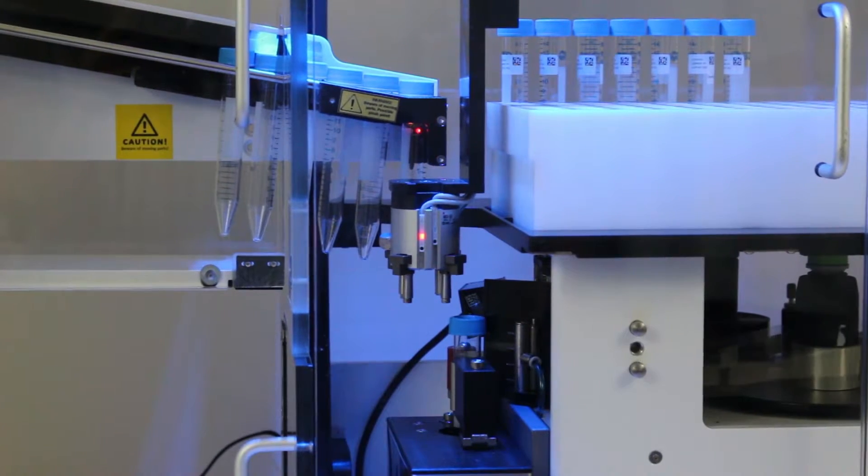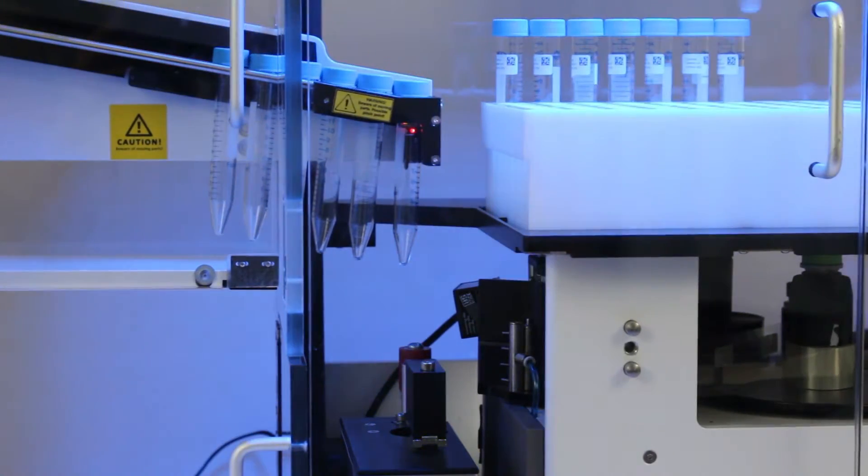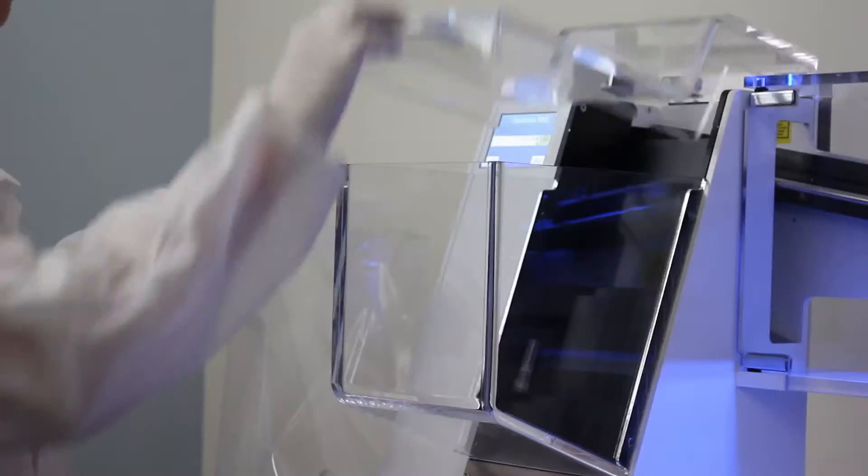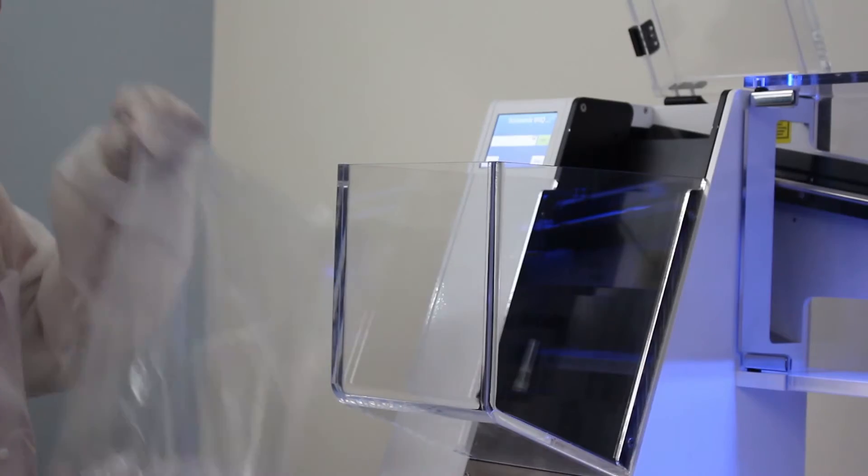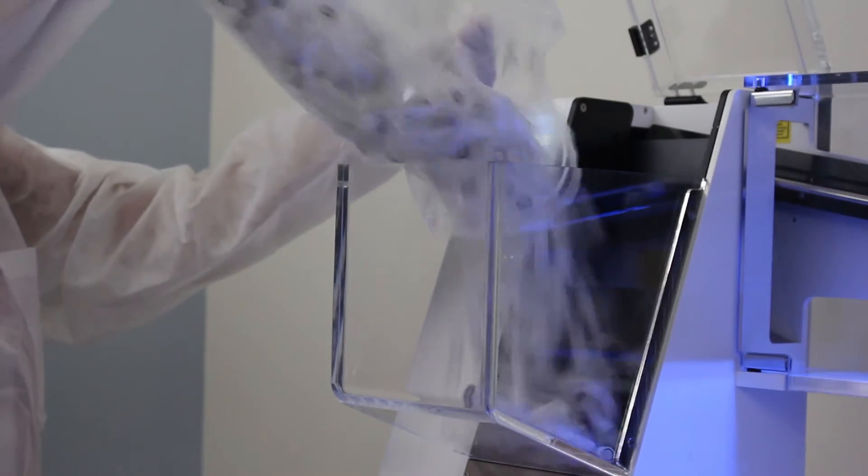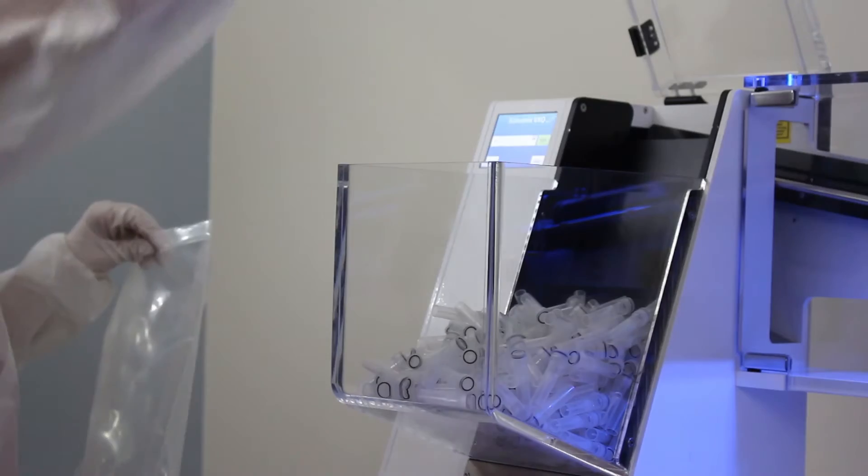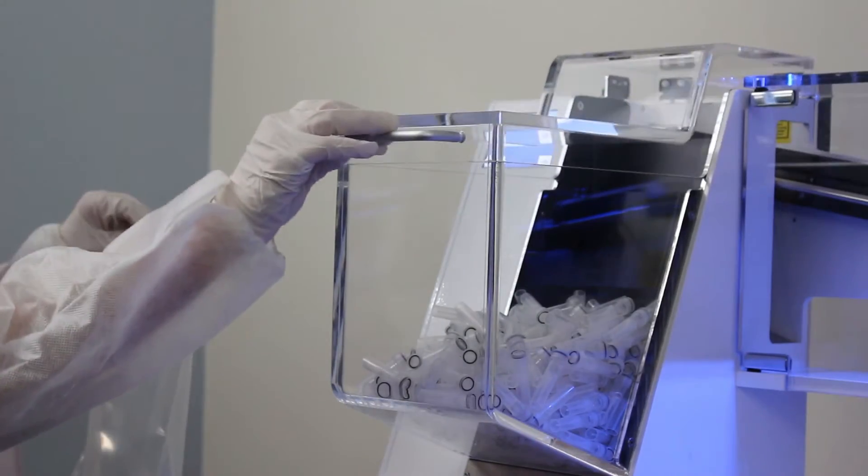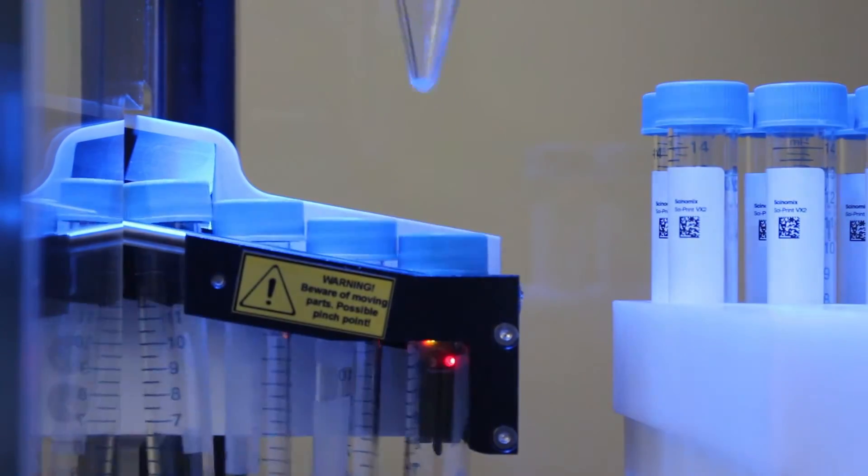The system easily attaches to the SciPrint VX series and can be seamlessly retrofitted in the field to existing machines. Bulk tubes are loaded into the hopper that is compatible with a variety of tubes ranging from 0.5-milliliter cryovials to 15-milliliter conicals and vacutainers.